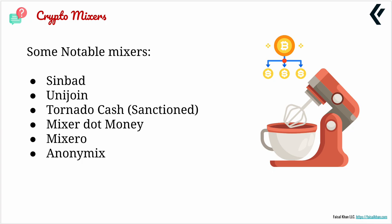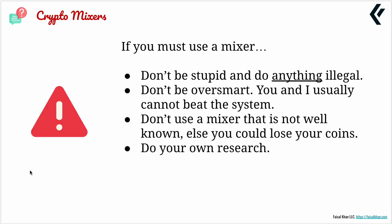Some notable mixers — and I'm not advocating anything, just giving names — include Sinba, Unijoin, Tornado Cash (which has been sanctioned by the U.S. government), Mixer.Money, Mixero, and Anonymix, among others coming and going. If you must use a mixer, please do not do anything illegal. Don't use a mixer that is not well known, else you could lose your coin — there are plenty of scam mixers that will take your coins and there's nothing you can do about it. Please do your own research.